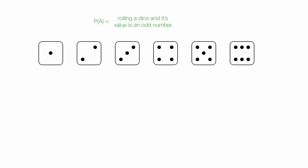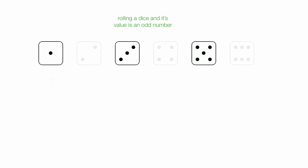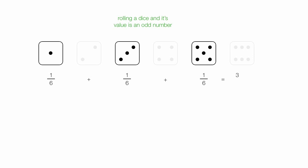Event A is rolling a dice and its value is an odd number. So in this case, the die could be a 1, a 3, or a 5. There's a 1 out of 6 chance for a 1, a 1 out of 6 chance for a 3, and a 1 out of 6 chance for a 5. All those added up equal 3, so there's a 3 out of 6 chance of getting one of those — exactly 1 half.